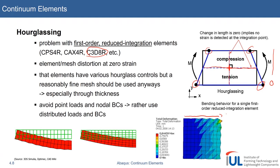Hourglassing tends to evolve and produces a characteristic wavy or hourglass-shaped pattern. It is more likely to occur under bending if you do not have a sufficient number of elements through the thickness — at least four elements through thickness is a good number to start with. With more elements, the wavy pattern disappears. Applying point-wise loads or nodal boundary conditions also increases the likelihood of hourglassing occurring.